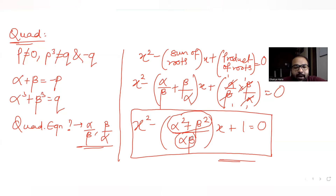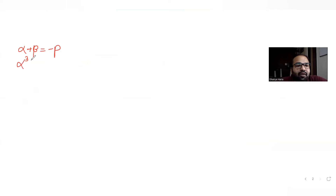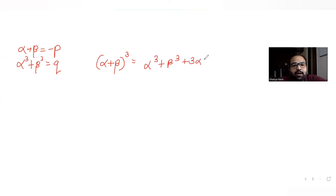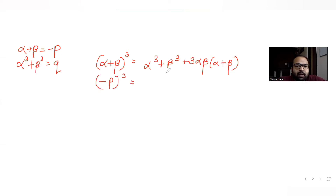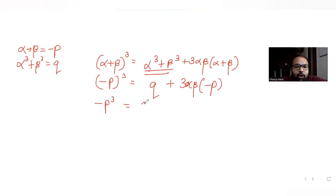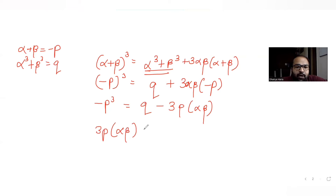We are given alpha plus beta = minus p and alpha³ + beta³ = q. Using the identity (a+b)³ = a³ + b³ + 3ab(a+b), we write (minus p)³ = q + 3·alpha·beta·(minus p). This gives minus p³ = q minus 3p·alpha·beta, so 3p·alpha·beta = p³ + q, meaning alpha·beta = (p³ + q) / 3.